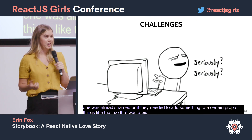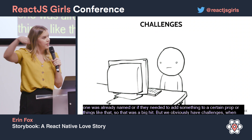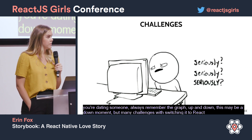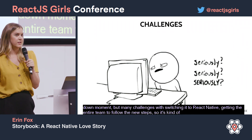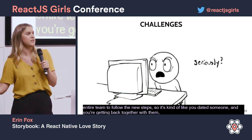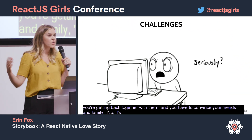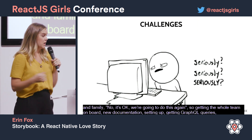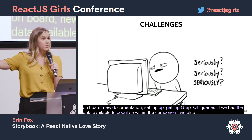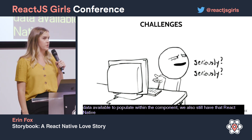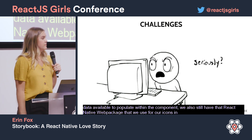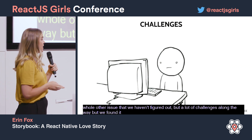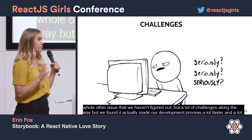We obviously had challenges — always remember the graph goes up and down, and this may be a down moment. Many challenges included switching Storybook to React Native and getting the entire team to follow the new steps. It's kind of like convincing your friends and family when you get back together with someone. Getting the whole team on board, writing new documentation, the setup, getting GraphQL queries if we had data available to populate components. We still have that React Native Web NPM package for icons and certain headings, which is a whole other issue we haven't figured out. But we found it actually made our development process a lot faster and easier for viewing and creating components in an isolated environment.